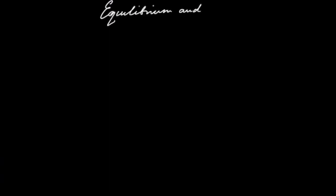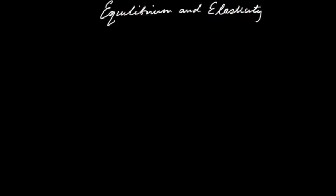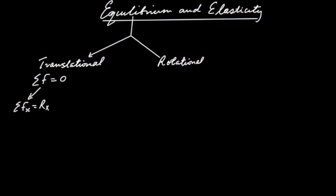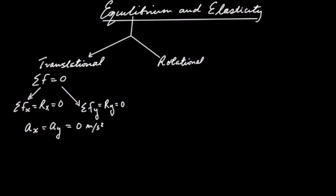In this lesson, we'll talk about equilibrium and elasticity. Equilibrium can be thought of as translational equilibrium and rotational equilibrium. In translational equilibrium, the sum of the linear forces must be equal to zero, and hence the linear acceleration will be equal to zero because there's no net force.